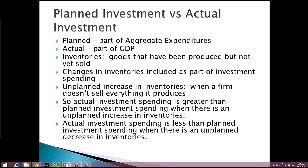Actual investment spending — what's counted in GDP — is greater than planned investment, which is what's counted in aggregate expenditures, when there's an unplanned increase in inventories. And actual investment spending is less than planned investment spending when there's an unplanned decrease in inventories. That's a lot of words, so let's look at a table and think about it.